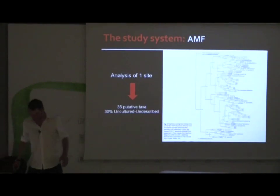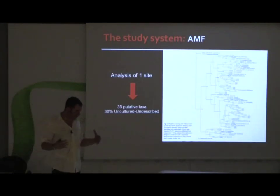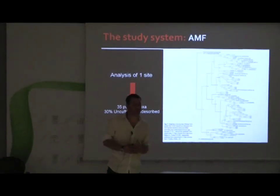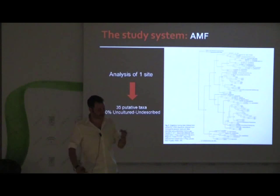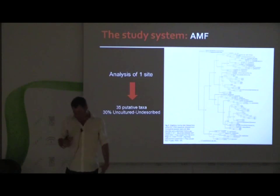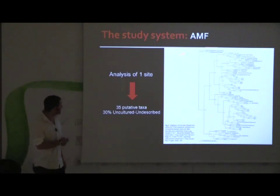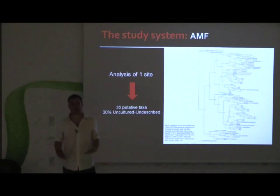Also associated with these grasses, you have arbuscular mycorrhizal fungi — a group of fungi that are mutualistic. The plants get nitrogen and phosphorus from the interaction and the fungi get sugars. I tried to understand what the role of these mycorrhizal fungi was in the system. These are plant mutualists, and I thought perhaps they are helping the plant to cope with these root herbivores — these plant parasitic nematodes at root level.